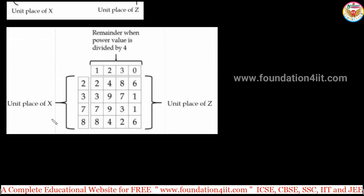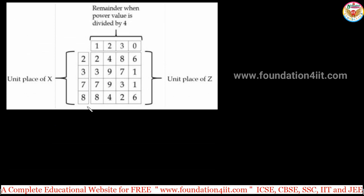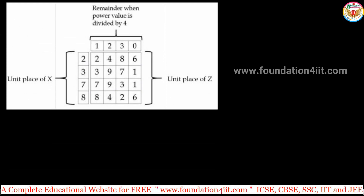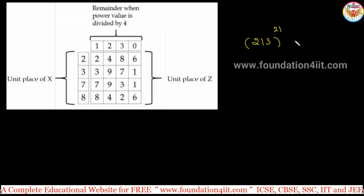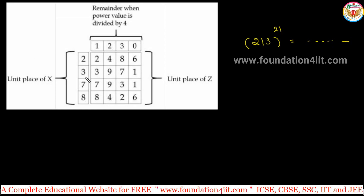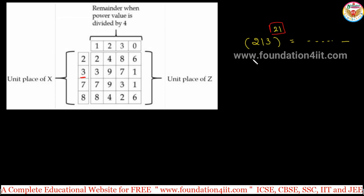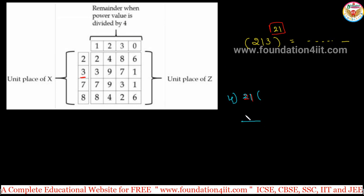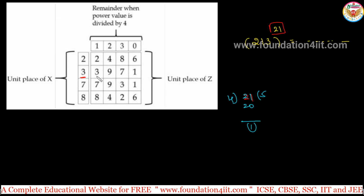So the first table covers 0, 1, 5, 6; the second table covers 4 and 9 — total 6 digits done. Next, if the unit digit is 2, 3, 7, or 8, to get the answer use the cycle 2→4→8→6, 3→9→7→1, 7→9→3→1, 8→6→4→2. The rule: divide the power by 4 and use the remainder. For example, 213 to the power 21 — unit digit is 3. Take 21 divided by 4: 4 times 5 is 20, remainder is 1.